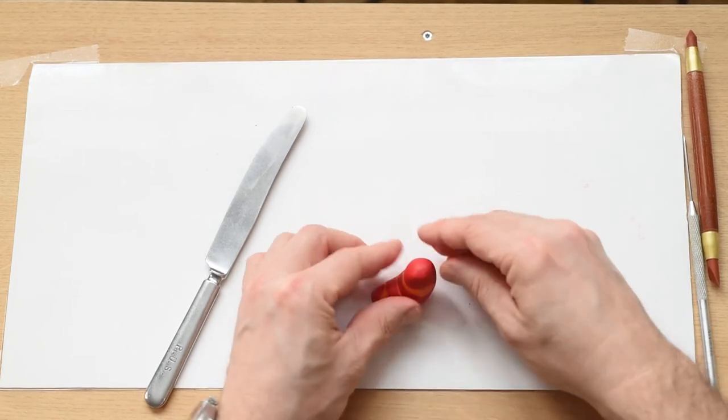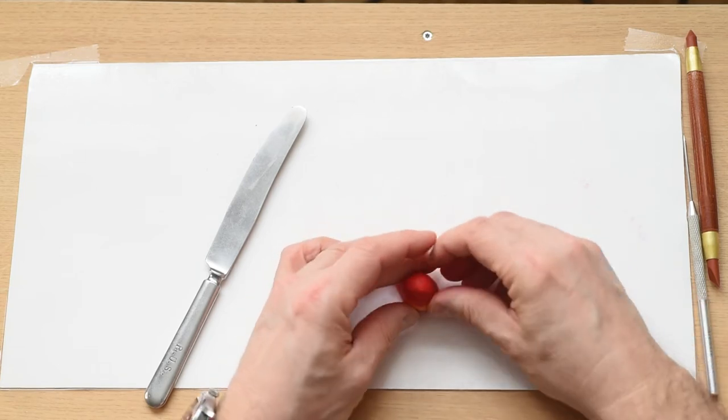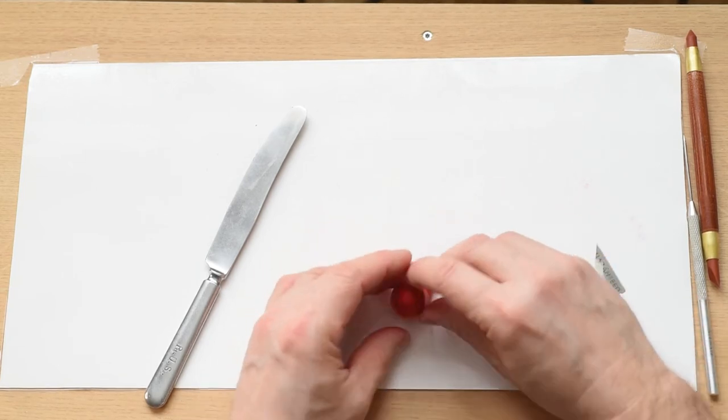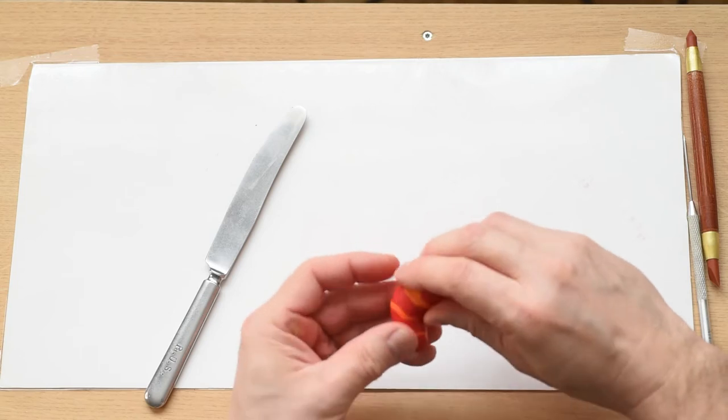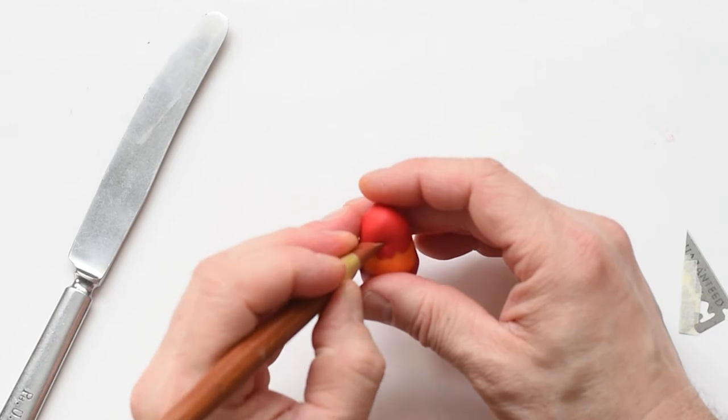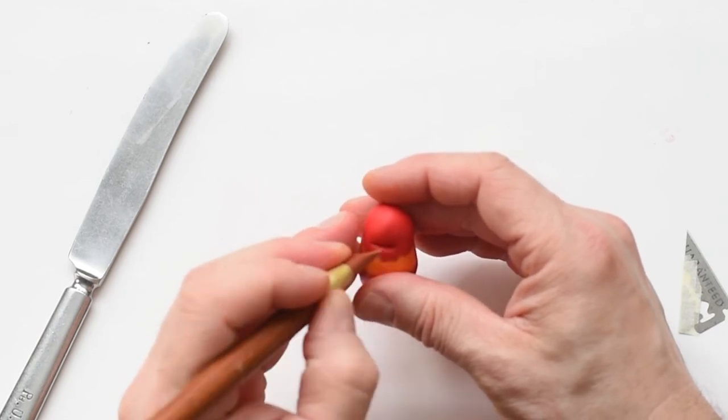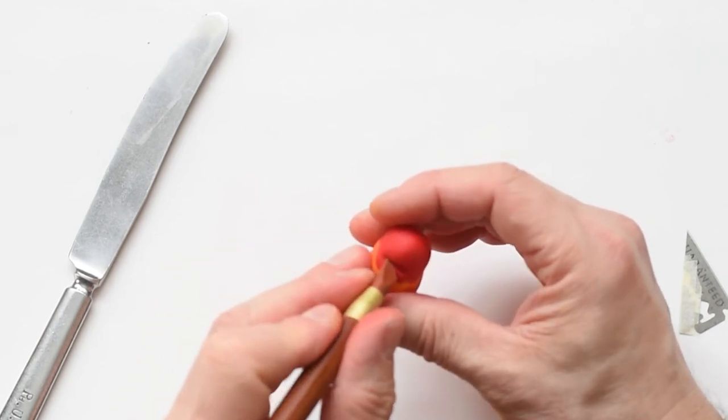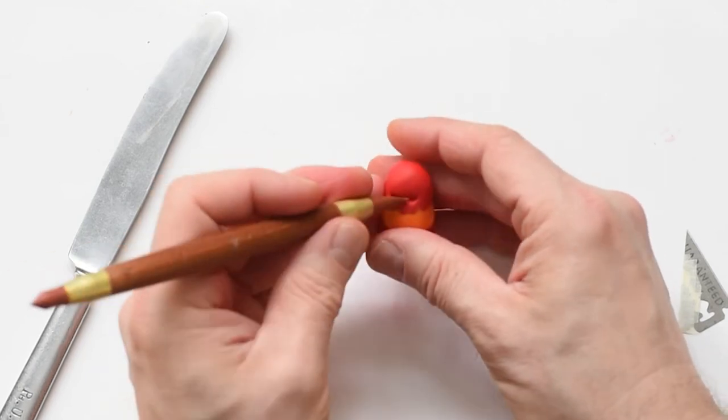Don't squeeze too hard with your fingers, otherwise you might lose the shape and the stripes might look silly. Now the next thing is the mouth. I use my tool and I try to dig in and get a perfect mouth.